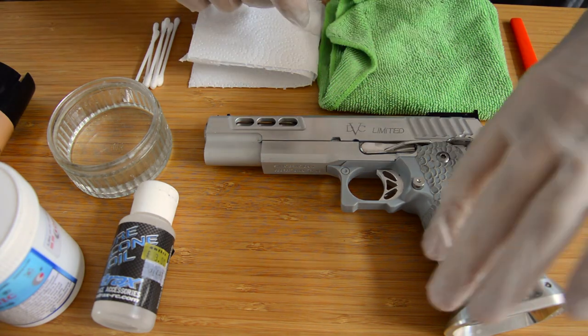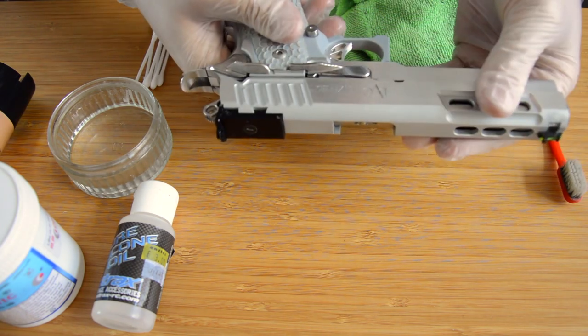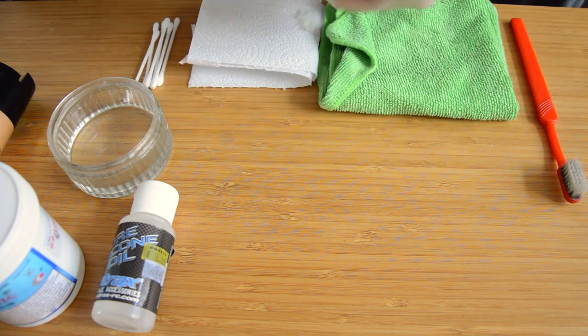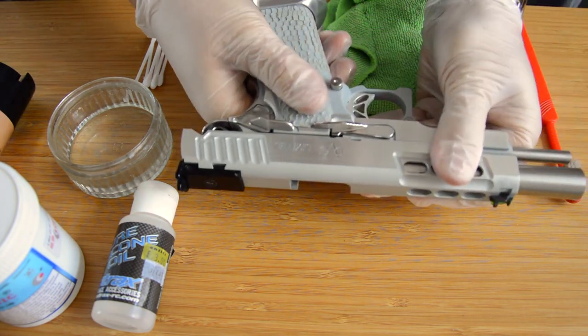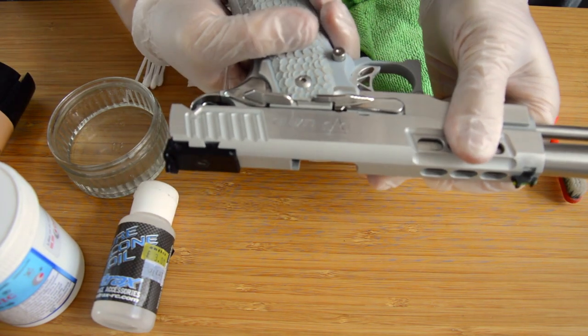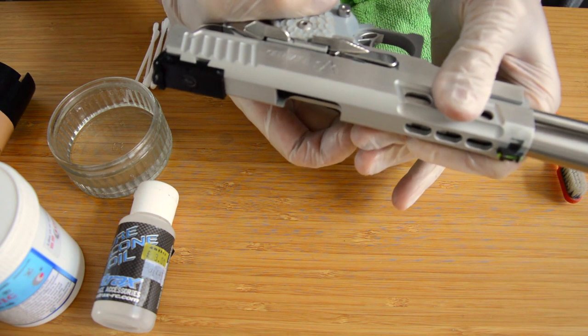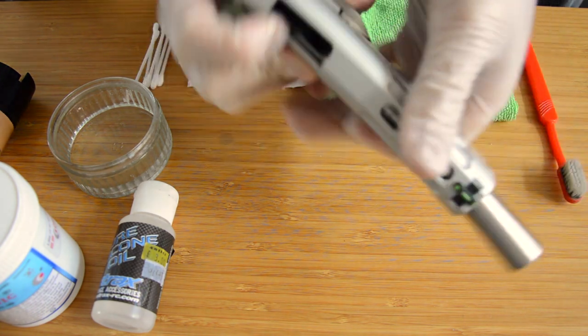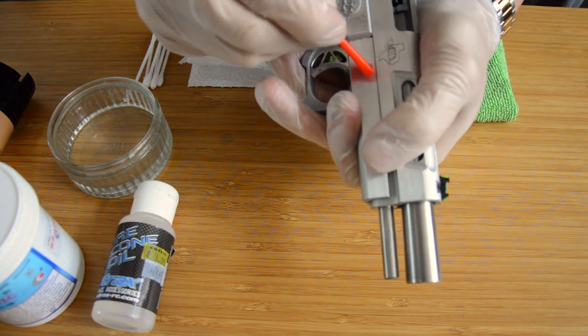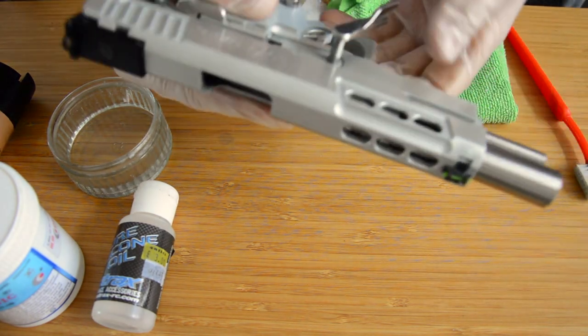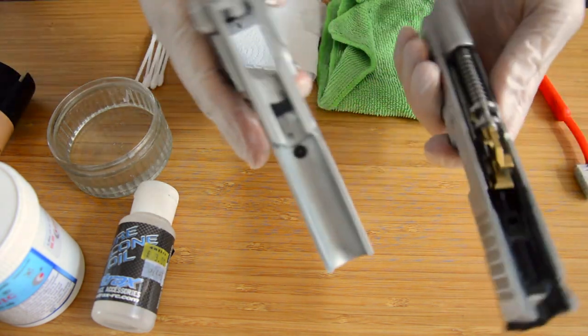Alright, so let's begin. First, you field-strip your pistol. This may be unique for yours, but for a Hi-Capa or 1911, you ensure the magazine is removed. Ensure the slide back so that the takedown notch is lined up. As I said, all guns can be a bit fiddly. This one, hold it in place and pop out your slide stop pin. You can just remove the side, take off your top slide.